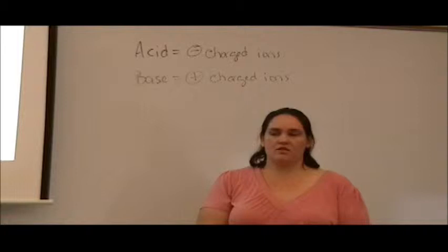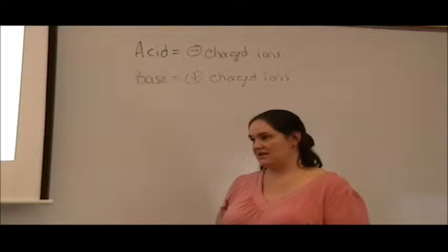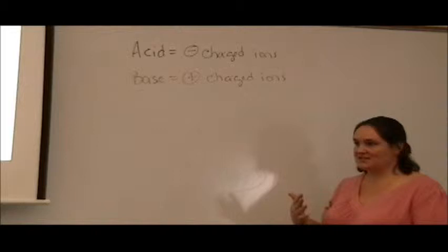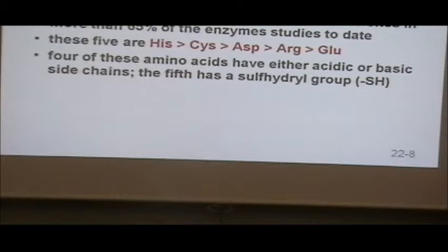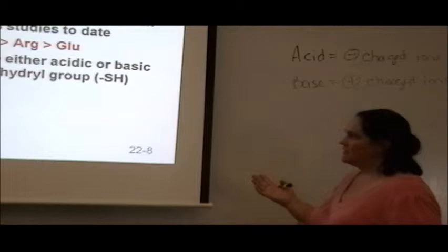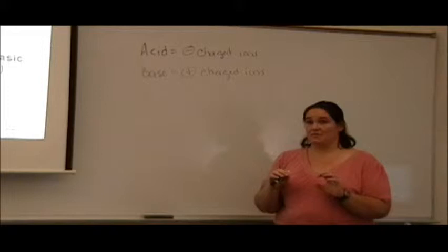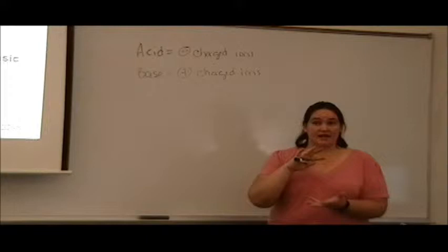All charge-charge interactions — including salt bridges — occur because of things in the side chains of amino acids. Only the acidic and basic amino acids carry positive and negative charges. The fifth special amino acid is cysteine, which forms disulfide bonds — a big topic from the proteins chapter.